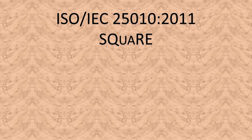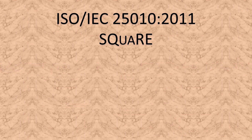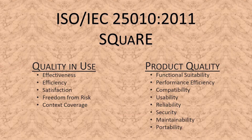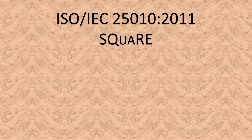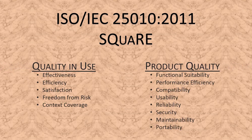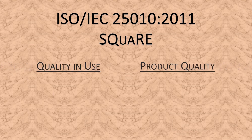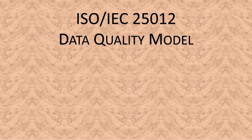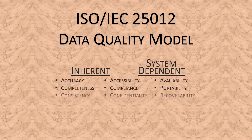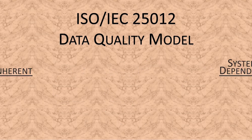SQuaRE defines two models: Quality-in-Use and Product Quality. These models define characteristics relevant to all software products and computer systems. These models have been decomposed into factors, with some of the factors further decomposed into sub-factors. ISO-IEC 25012 contains a complementary data quality model.